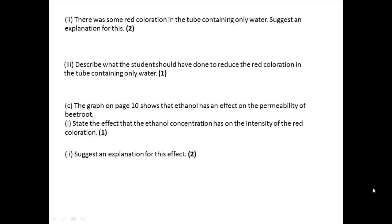Part two for this question states there was some red coloration in the tube containing only water, suggest an explanation for this. What this is saying is if we believe that it is the ethanol causing the breakdown of the cell membrane and causing the leaching of the pigment that gives beetroot its red color, then how come we got some red coloration from only water?